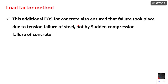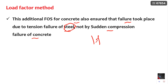The additional factor of safety applied to concrete in the load factor method also ensures that failure takes place due to tension failure of steel only, not by sudden compression failure of concrete. Steel is a ductile material — it undergoes plastic strain, giving enough warning time before the structure fails. When concrete fails first, the structure suddenly collapses. If steel undergoes initial failure, cracks appear first giving warning, but if concrete fails first, sudden collapse occurs.